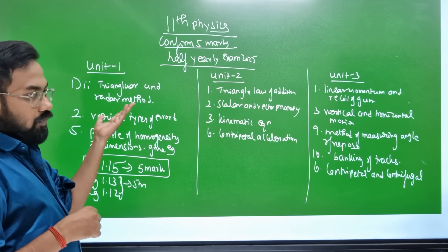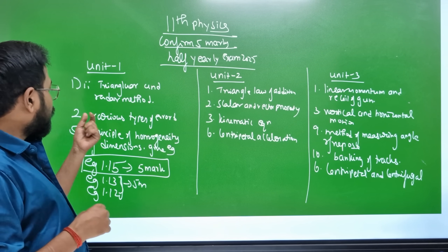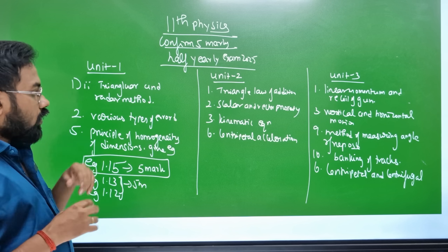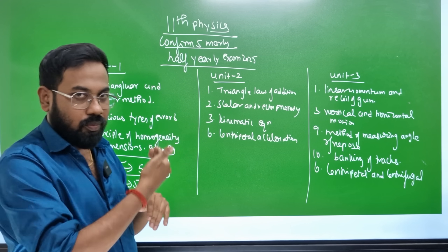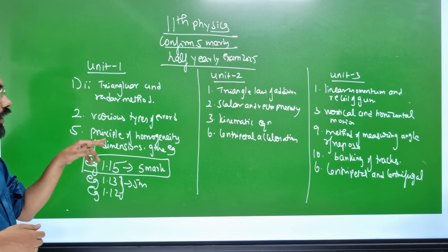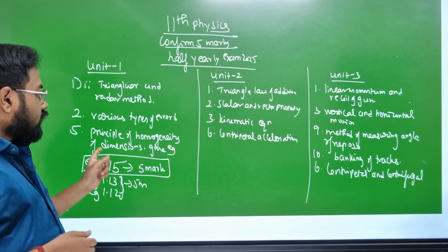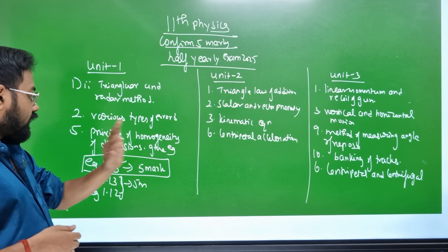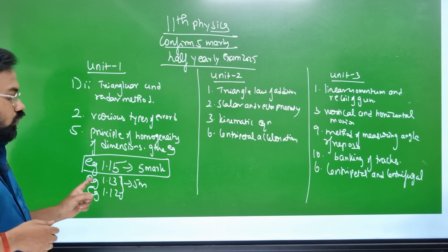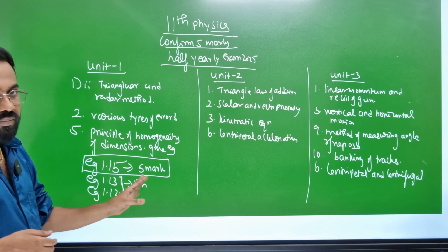Unit 1 topics include the Triangle and Radar method, various types of error — which is a long-answer bookback question — and the Principle of Homogeneity of Dimension. Example 1.15 is very easy.